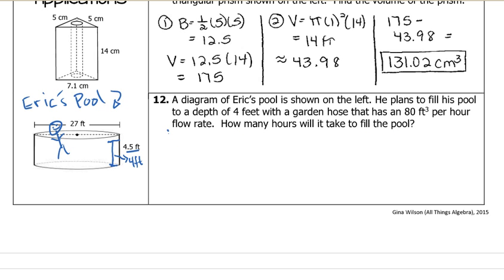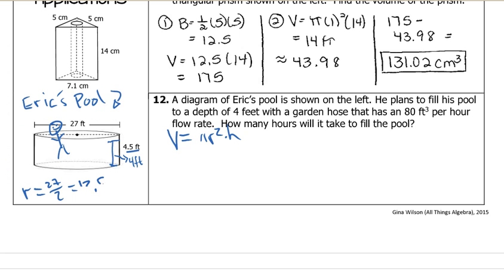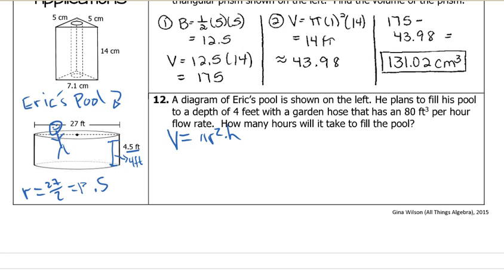And we are just finding the volume. So volume equals pi r squared times my height. Now my radius is going to be half of 27, which is 13.5. Double check, 27 divided by 2. Yeah, 13.5. Now plug it in. So volume equals pi times 13.5 squared. Now my height here is 4 feet. That's where the height comes from. 4 feet.